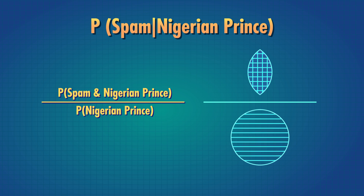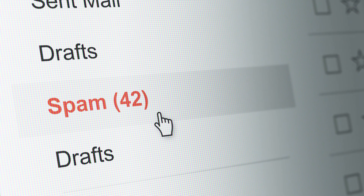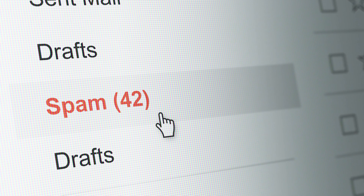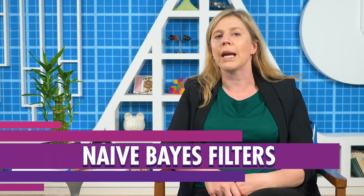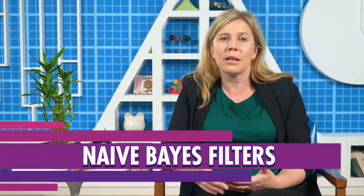Now if we want to know the proportion of times when an email is Spam, given that we already know it has the words 'Nigerian Prince', we need to look at how much of the whole 'Nigerian Prince' circle that the region with both Spam AND 'Nigerian Prince' covers. Actually, some email servers use a slightly more complex version of this example to filter Spam. These filters are called Naive Bayes filters, and thanks to them, you don't have to worry about seeing the desperate pleas of a surprisingly large number of Nigerian Princes.